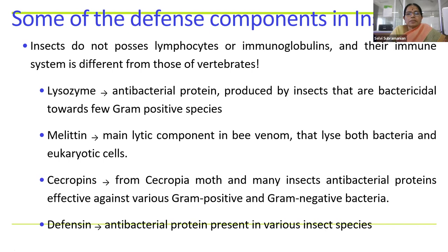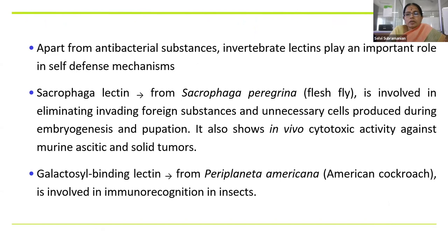These toxins have much value. For example, lysozyme can be used for degrading bacterial cell walls, melatonin is obtained from bee venom, sarcopene serves some bacterial purpose, and defensin. These have some function in their insects as well as we exploit them for other purposes.